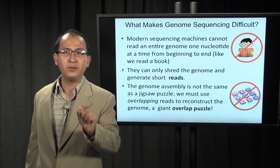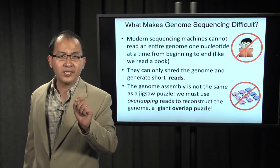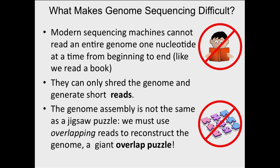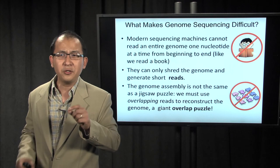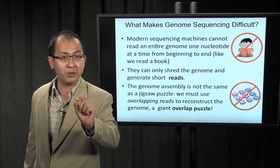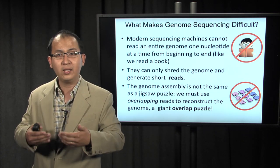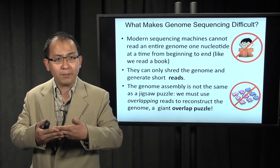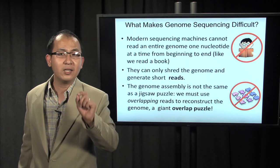What makes genome sequencing so difficult? The genome is like a book written in the alphabet of nucleotides — A, T, C, G — but its length is 3 billion. Unlike reading a book, a modern sequencing machine cannot read from start to end. Instead, it can only shred the genome and generate short reads. Some people think the genome puzzle is like a giant jigsaw puzzle, but remember: it is not similar to a normal jigsaw puzzle where pieces do not overlap. In the genome puzzle, reads overlap, so this should be called an overlapping puzzle.